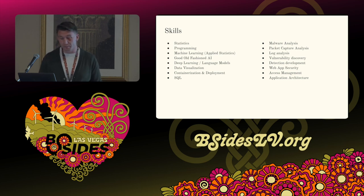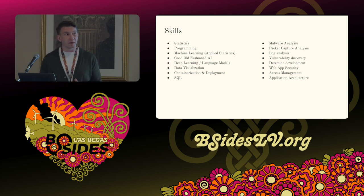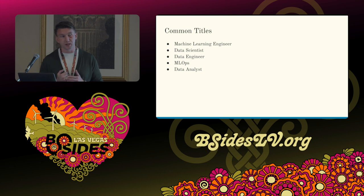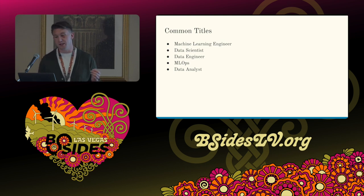If you can't look at a PCAP and say, 'Oh, this is using a printer protocol that wasn't in our training set,' you're not going to catch that. It can be really tough. As we look at skills — whether that's good old-fashioned AI, deep learning, data visualization, containerization and deployment, MLOps, et cetera — that brings us into job titles. Some common titles include machine learning engineer, data scientist, data engineer, data analyst, MLOps engineer, et cetera.